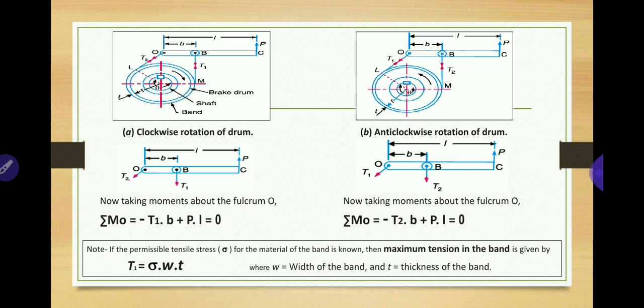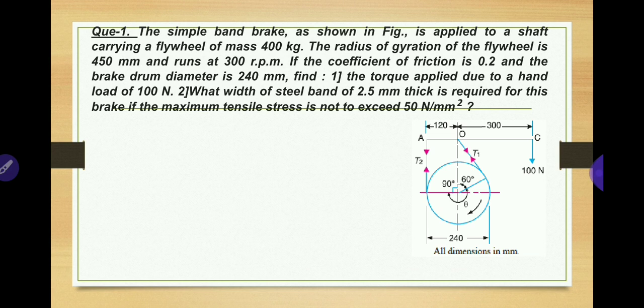One additional relation: T1 = σ × w × t, where σ is the maximum permissible tensile stress in the band material, w is the width of the band, and t is the thickness. If σ is given in the problem, you can calculate the maximum tension T1 directly using this formula. Remember this formula — it is needed when band dimensions are asked.